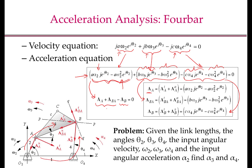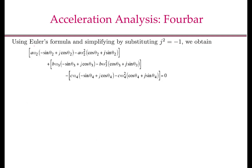To simplify this equation, we will use Euler's formula to expand all the exponentials and then carry out the algebra. By using Euler's formula, multiplying throughout, and substituting j squared equal to minus 1, we will get this expression.